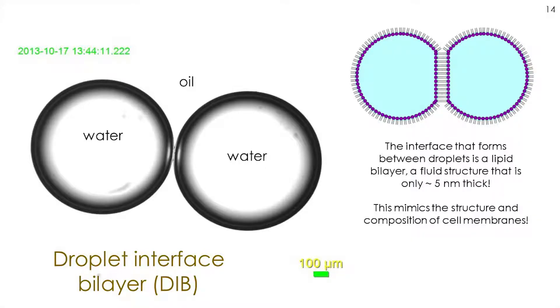It's this interface that is a mimic of the structure and composition of a cell membrane. It's a really simple way to experimentally mimic that environment. In the community this is known as the droplet interface bilayer. These droplets are maybe a millimeter in size, a couple hundred nanoliters. We're looking at them through a microscope objective. The interface that forms there is only two molecules thick, about five nanometers thick.